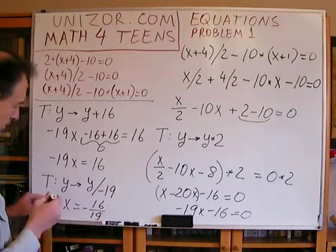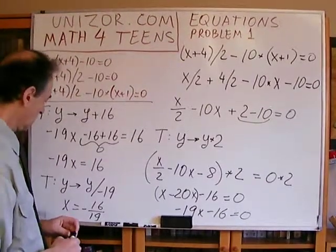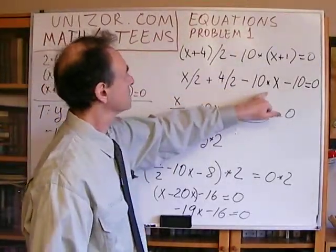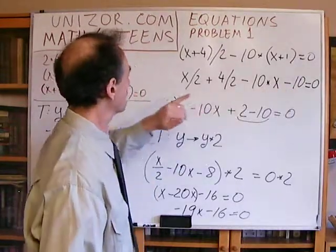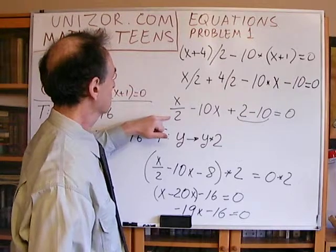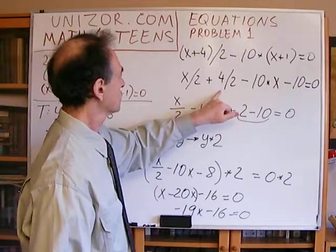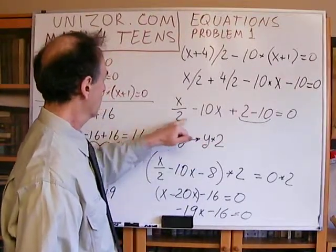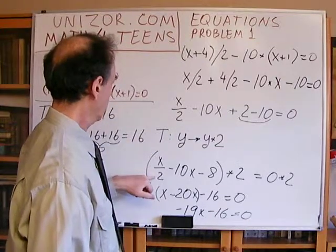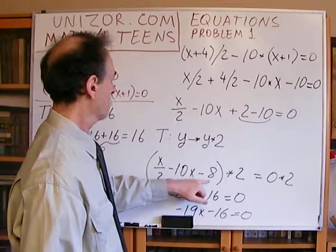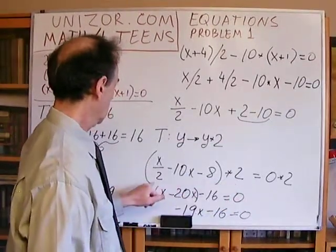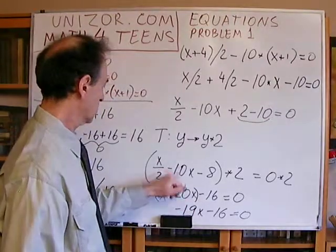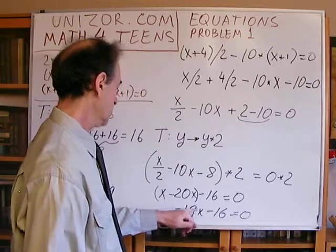I'm not sure why I have such a strange number — maybe I made a mistake, maybe not. Let me check. The original equation was x plus 4 divided by 2 minus 10x minus 10 equals 0 — that seems correct. And x divided by 2 minus 10x times 2 gives x divided by 2 minus 10x minus 8 times 2, giving 0 times x minus 20 and minus 16. That seems correct.